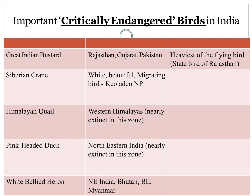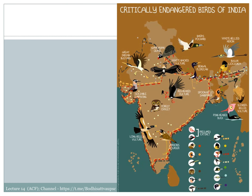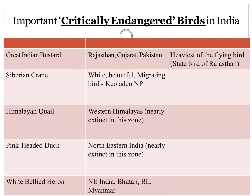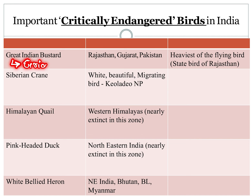Critically endangered birds in India. The Great Indian Bustard — everyone knows about it. Its population is down to about 100. It is a critically endangered species. The major threat is electricity grids — power lines kill them. It is the heaviest flying bird and is also the state bird of Rajasthan.